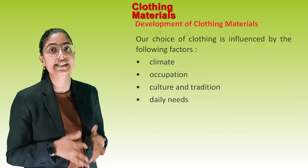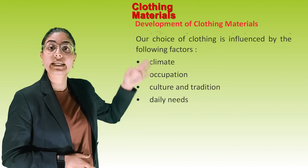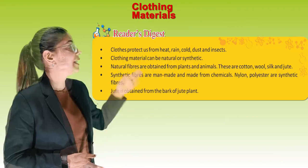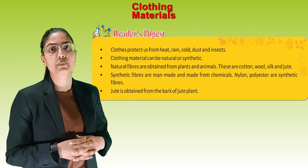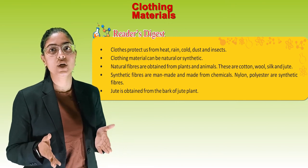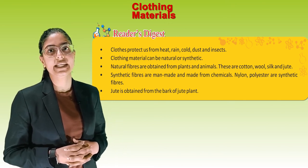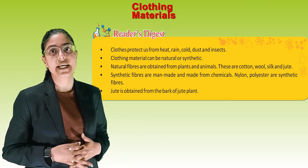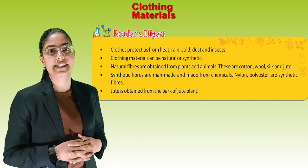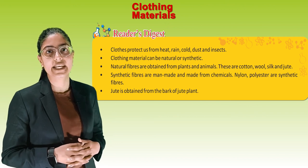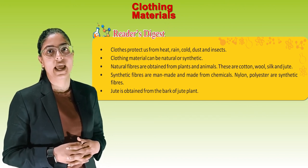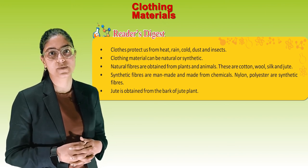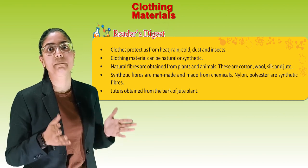Our choice of clothing is influenced by various factors. To recap: clothes protect us from heat, rain, cold, dust and insects. Clothing material can be natural or synthetic. Natural fibres are obtained from plants and animals — these include cotton, wool, silk and jute. Synthetic fibres are man-made and made from chemicals — these include nylon and polyester. Jute is obtained from the bark of the jute plant.